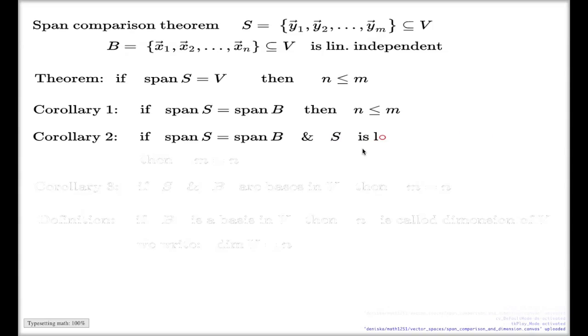So not only B is linearly independent, but S is also linearly independent, then in that case, they will have the same number of elements.